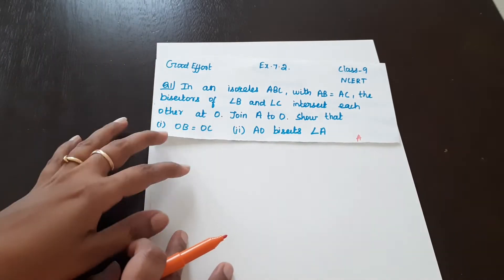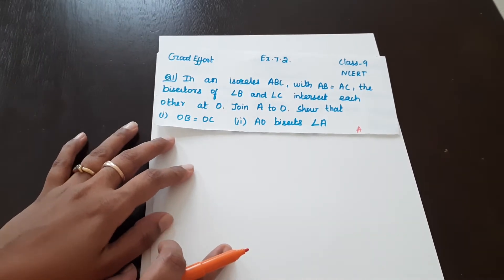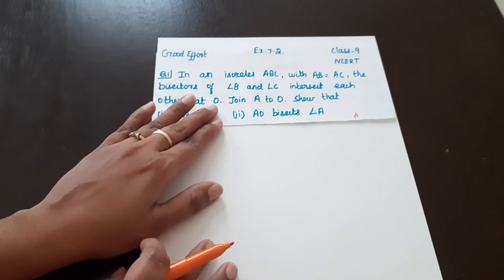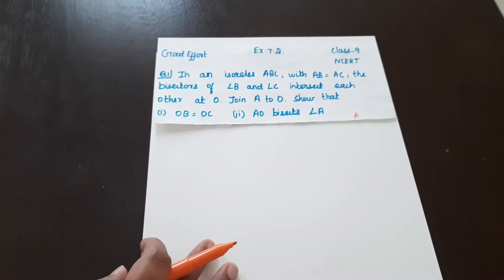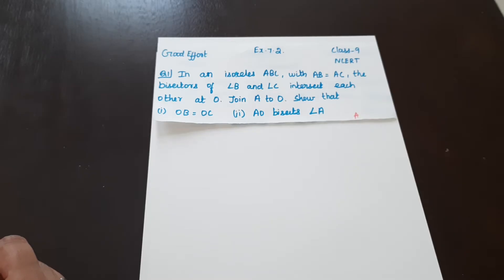Welcome to Good Effort Channel. Good morning students. I am going to be on Exercise 7.2, Question No. 1. In an isosceles triangle ABC with AB equal to AC, the bisector of angle B and angle C intersects each other at O. Join A to O. Show that OB is equal to OC, and AO bisects angle A.